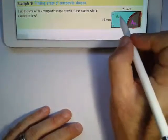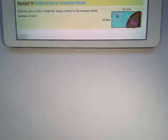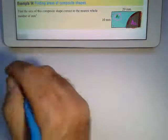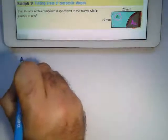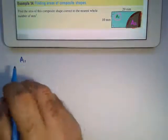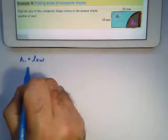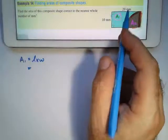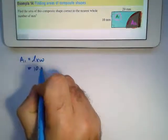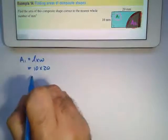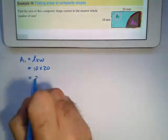So area one is a rectangle, so the formula for a rectangle is length times width. It's 10 millimeters by 20 millimeters. 10 times 20 is 200 millimeters squared.